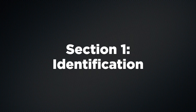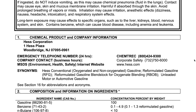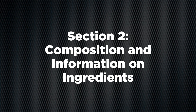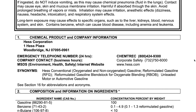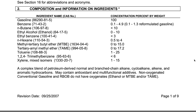Section one: Identification. Section one tells us about the chemical product, what its use is, and the company or contact information. Section two: Composition and Information on Ingredients. This section tells us what chemicals or ingredients are in the product.